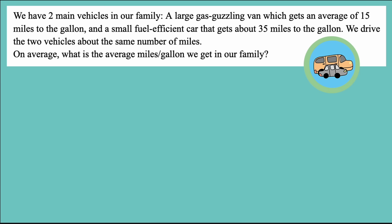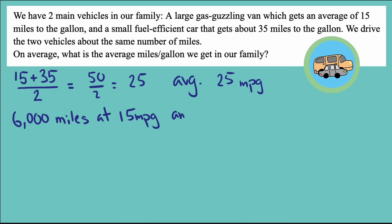Let's try the other problem. My students were tempted to do the same strategy with this problem as with the last one. Add up the two values and divide by 2 to get a total of 25 miles per gallon. Well, like in the first problem, I had my students verify the average by calculating from scratch the average miles I would get per gallon if we drove each of our vehicles 6,000 miles.